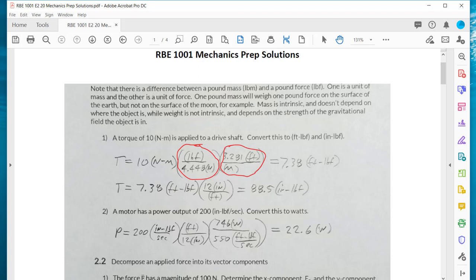We had a motor power output of 200 inch-pounds force per second. We multiply by 1 foot divided by 12 inches to get foot-pounds force per second. And then we know that 1 horsepower is equal to 550 foot-pounds force per second or 746 watts. They're equivalent. So we can set up this quotient and multiply through to do that conversion to get that into watts.